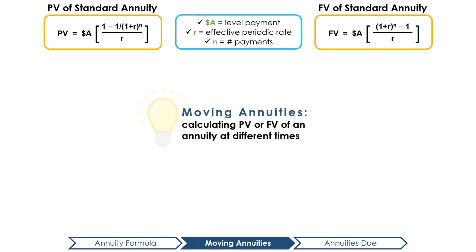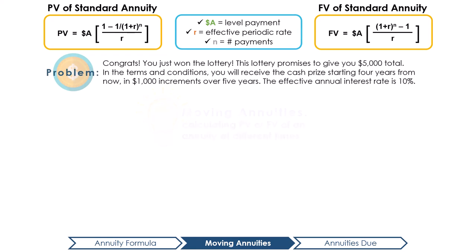Let's imagine that you won the lottery. Congrats! This lottery has promised to give you $5,000, a small pot, but that's okay. You finally won something! In the terms and conditions of winning this lottery, they have said that you will receive the cash price starting four years from now, or at the beginning of the fifth year, in $1,000 increments over five years.